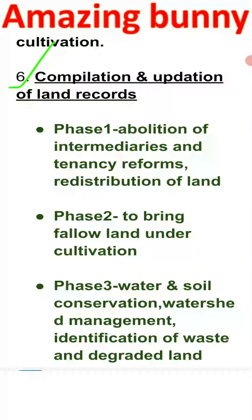Land reform in India has four phases. Phase one targeted the abolition of intermediaries, tenancy reforms, and redistribution of land. Phase two targeted wasteland — land which is fallow or not in use — bringing it under cultivation to increase production.